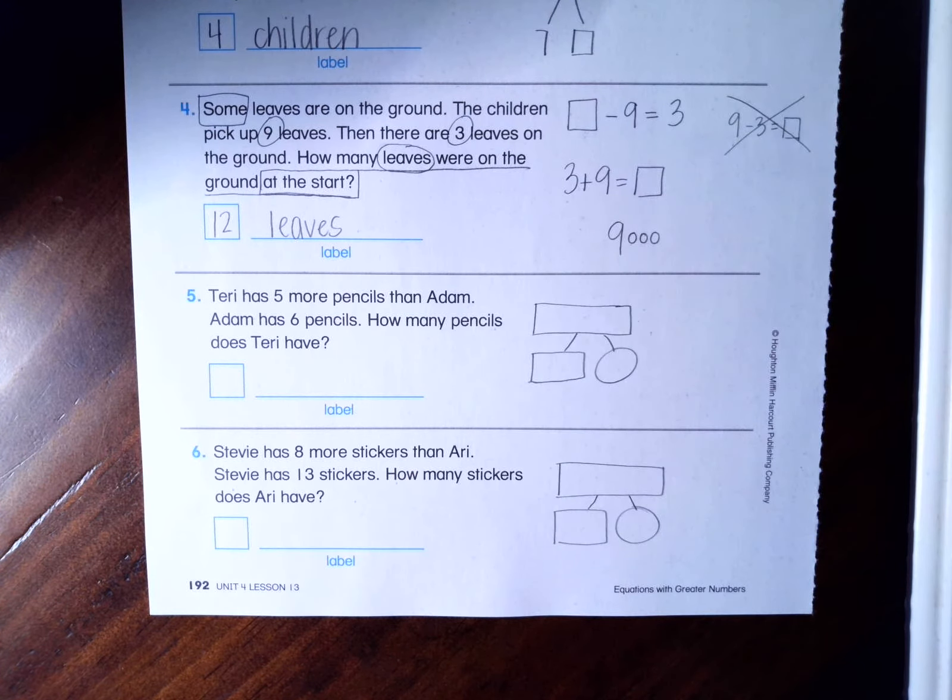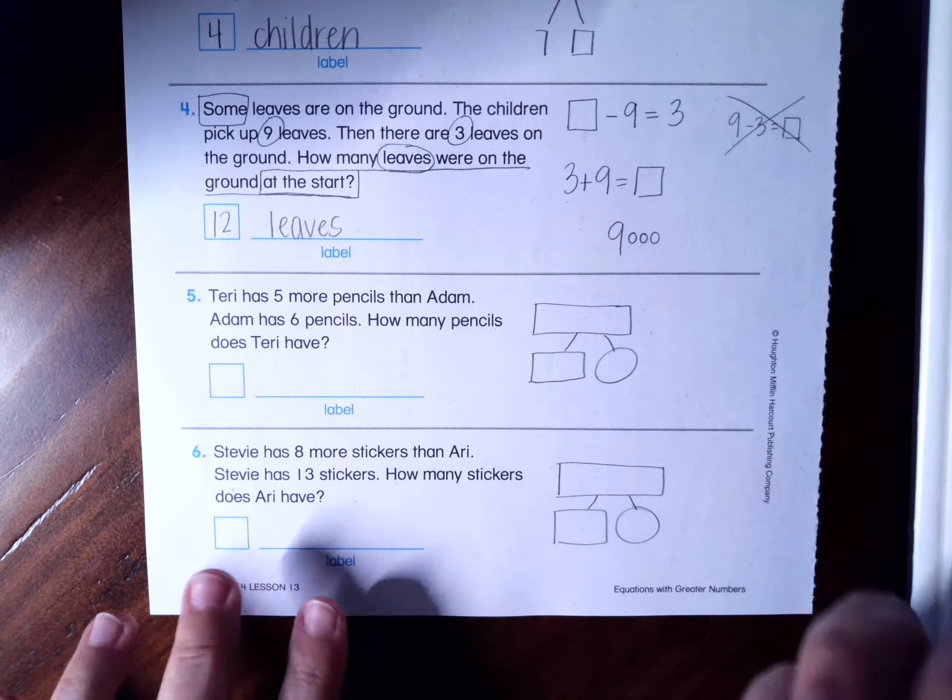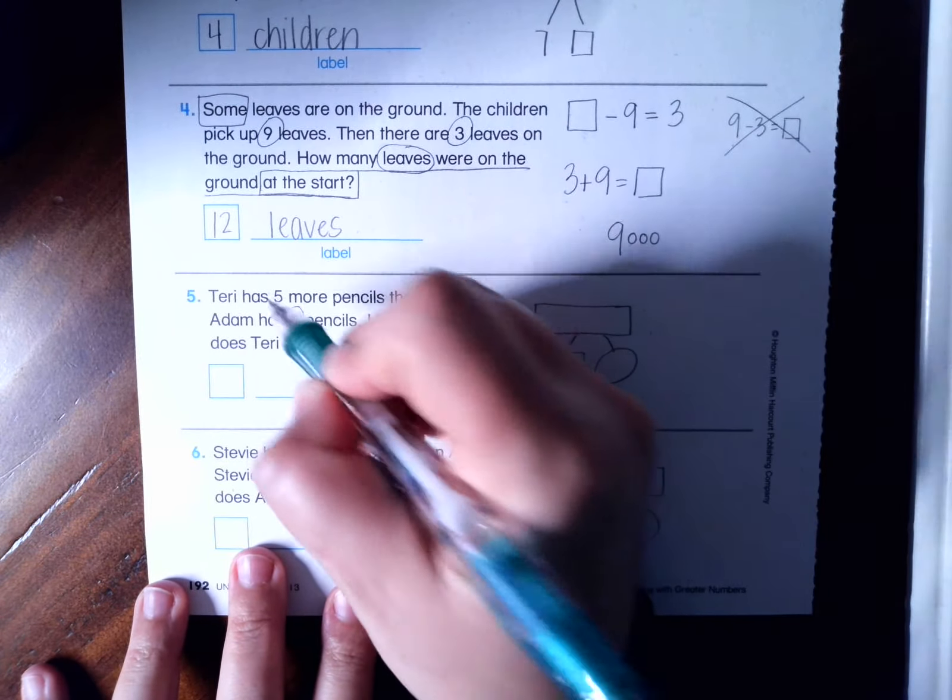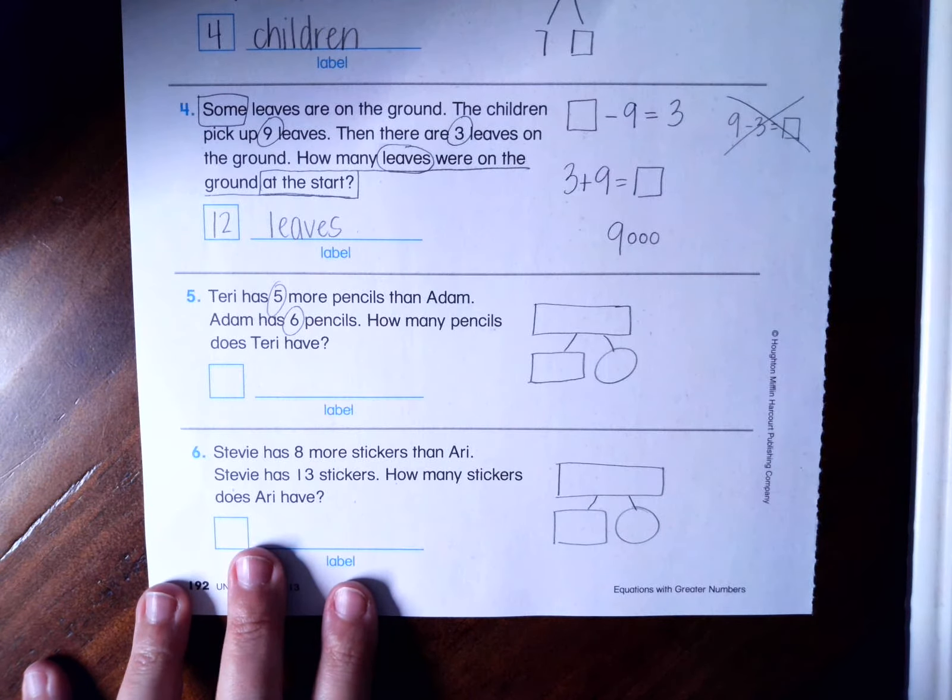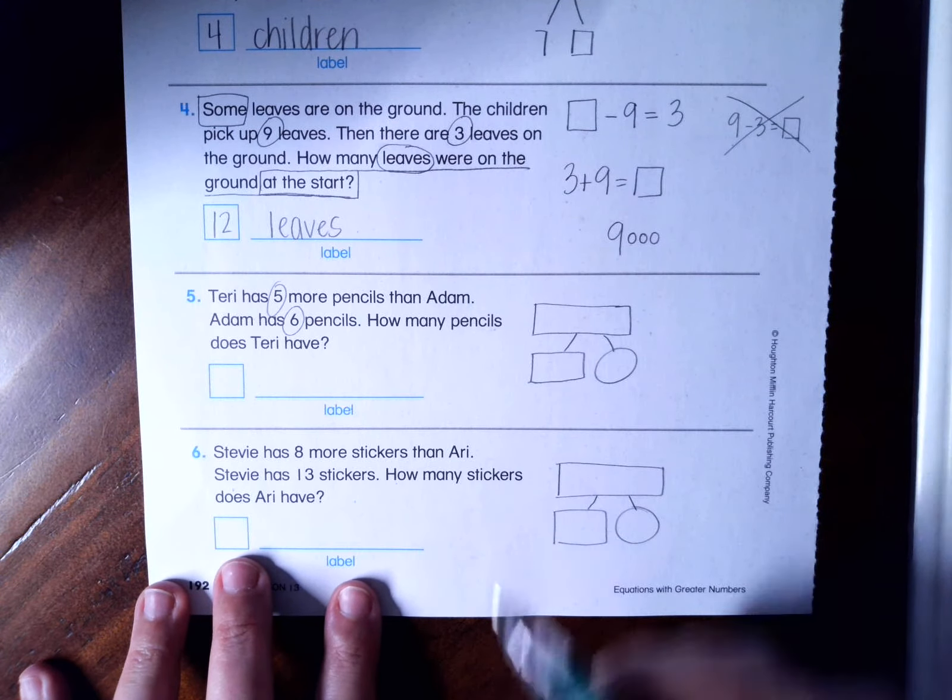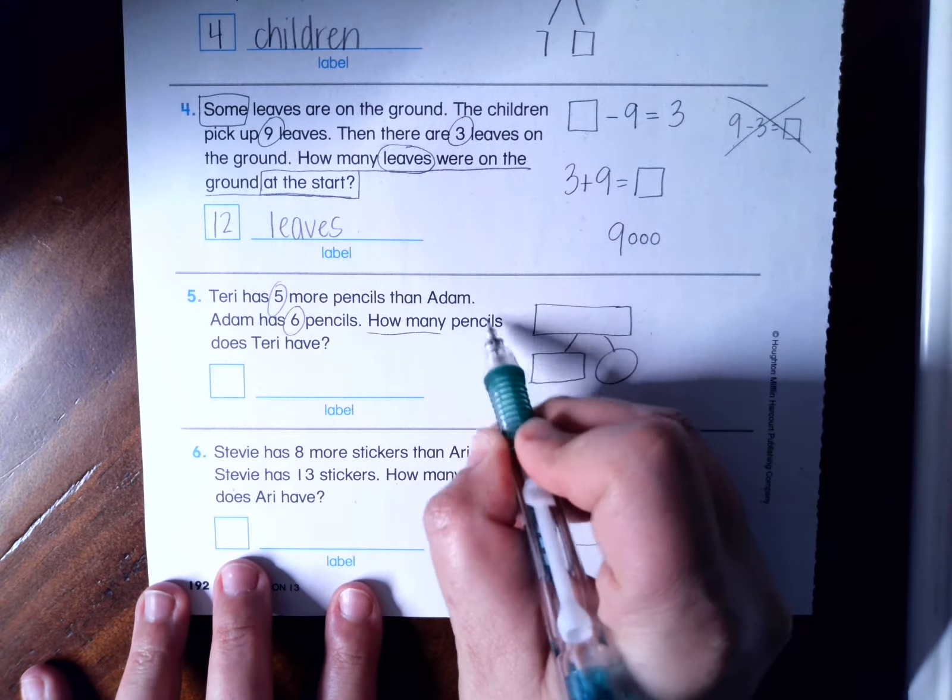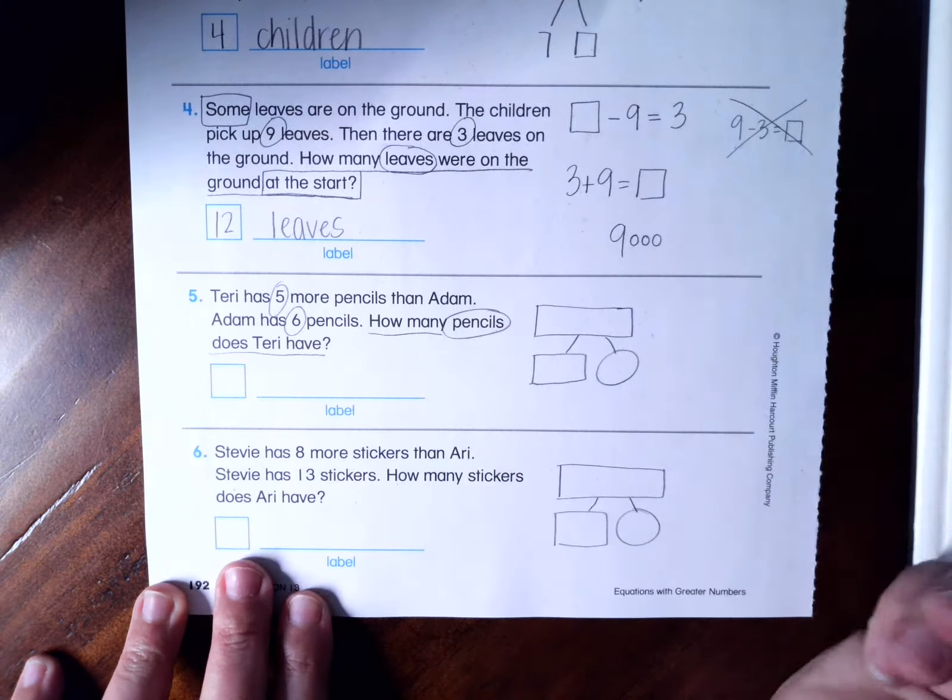Okay. So number five, it says, Tori has five more pencils than Adam. Adam has six pencils. How many pencils does Tori have? So I'm going to use my CUBES strategy to kind of help me figure out. I have five and I have six. Now, how many pencils does Tori have?